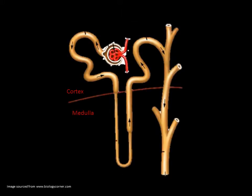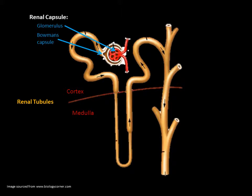In one kidney there is approximately one million nephrons, all of which consist of two main parts, the renal capsule and the renal tubules. The renal capsule is comprised of the glomerulus and the Bowman's capsule. The capsule encircles the glomerulus and is where the blood plasma filters into the renal tubules. The renal tubules are where reabsorption of water and solutes and the secretion of waste occurs to maintain correct blood volume and composition.